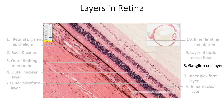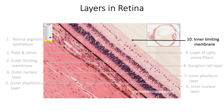In the ganglion cell layer, we see the cell bodies of ganglion cells — multipolar neurons arranged mostly as a single layer. The layer of optic nerve fibers contains axons of these ganglion cells, which run parallel to the retinal surface and converge towards the optic disc; branches of retinal vessels can also be seen in this layer. The innermost layer is the inner limiting membrane, formed by the foot plates of Müller cells, which separates the retina from the vitreous body.